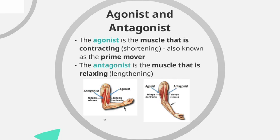Some terminology we need to know when talking about antagonistic pairs: first, the agonist, which is the muscle that is contracting or shortening — also known as the prime mover. A good way to remember this is that 'agonist' is similar to 'agony', and agony comes from working hard and being in pain, so the agonist is the muscle that is working.